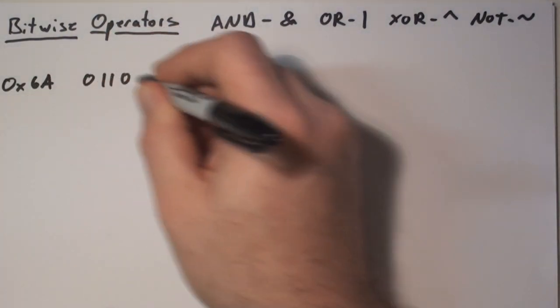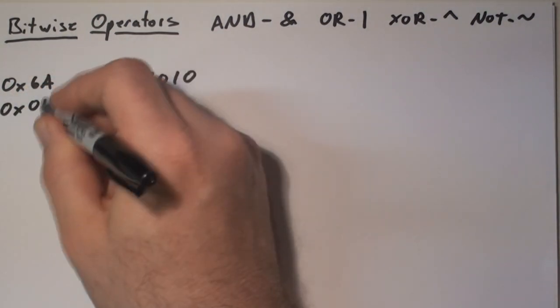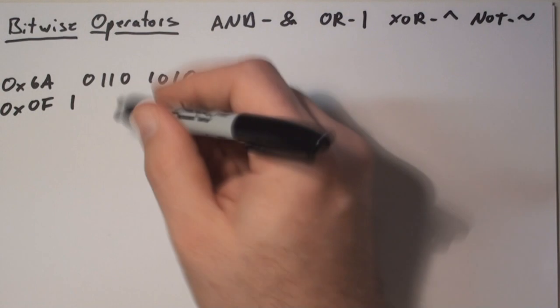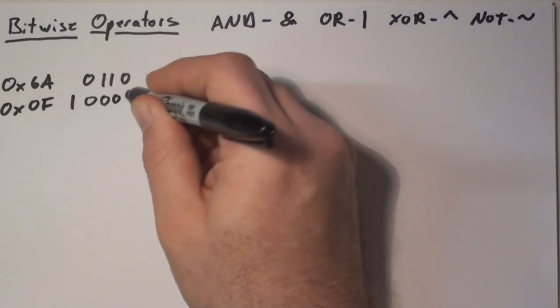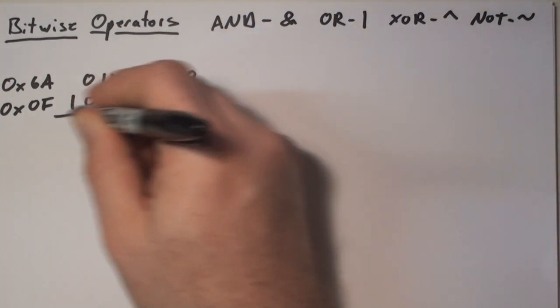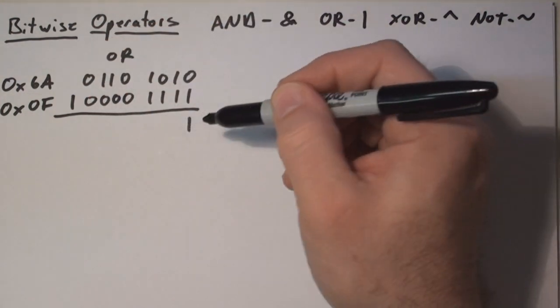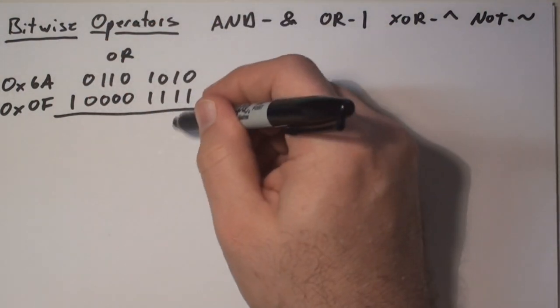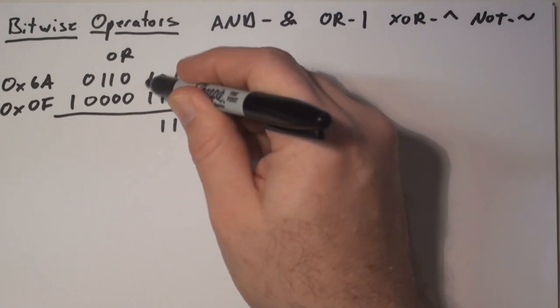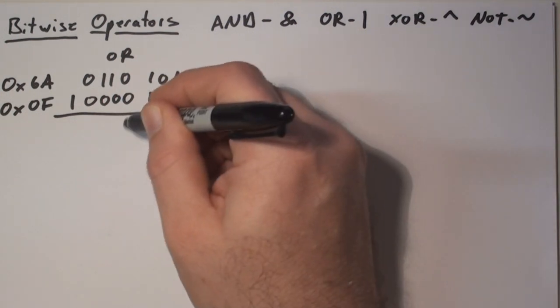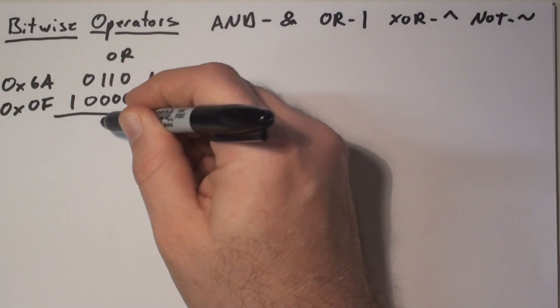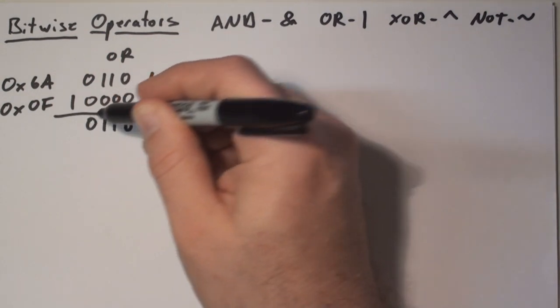In the first example here, we're going to do an OR operation on the two values 6A and 0F. The operation is performed just like a two input OR gate with a single output, where the first input is the top line and the second input is the bottom line. 0 and 1 is 1, 1 and 1 is 1, 0 and 1 is 1, 1 and 1 is 1, 0 and 0 is 0, 1 and 0 is 1, 1 and 0 is 1, 0 and 0 is 0.